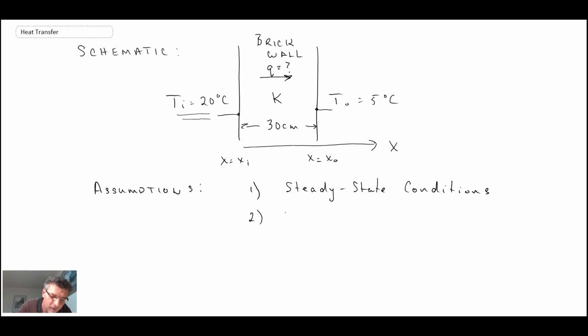Second thing, we're assuming that we have one-dimensional conduction through the wall. Even though this wall is finite, we're going to assume that we're looking in the middle region of the wall. If we were to go to the edges of the wall, then you would get more than 1D. You'd have 2D, maybe 3D conduction.